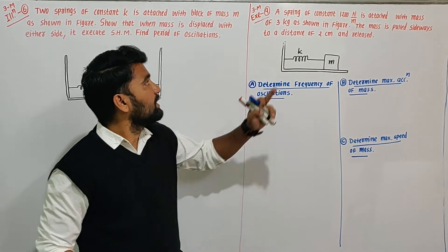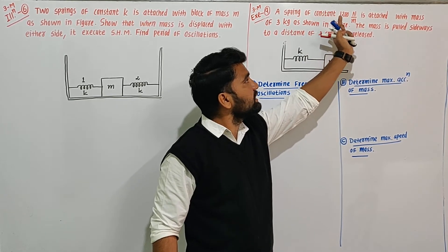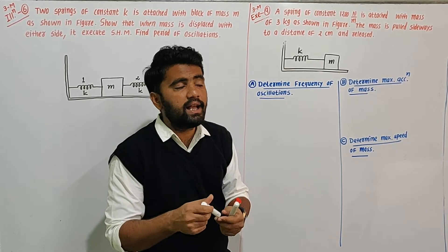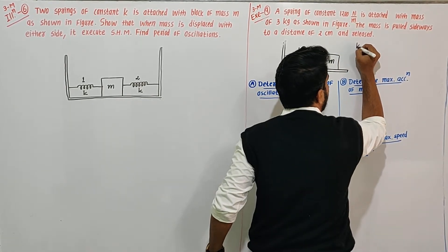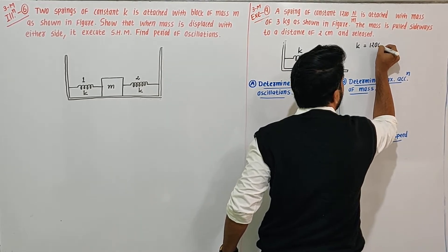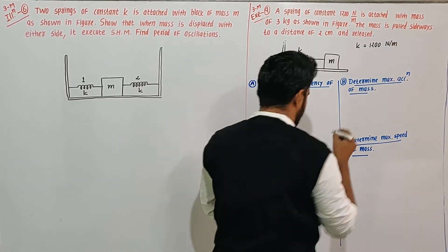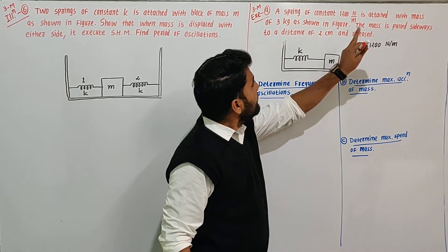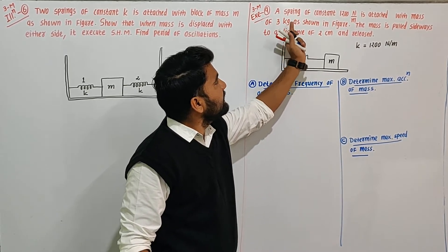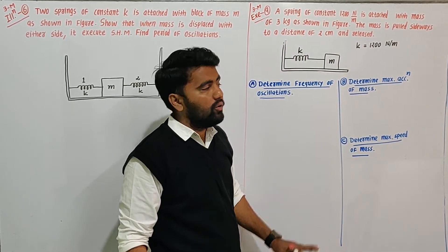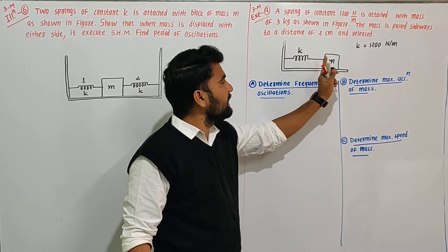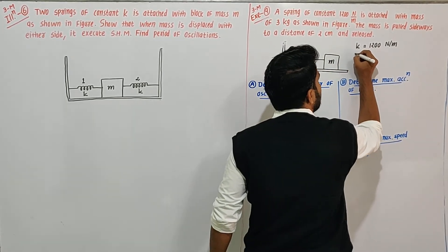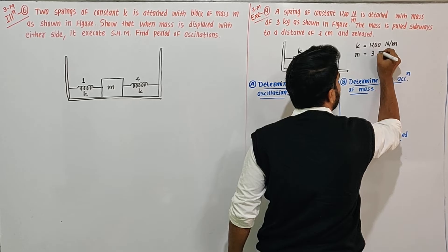In exercise number 9, a spring of spring constant K = 1200 N/m is given. It is attached with a mass of 3 kg as shown in the figure. So the spring constant K = 1200 N/m and mass M = 3 kg.